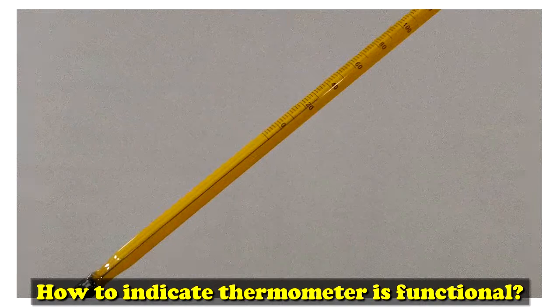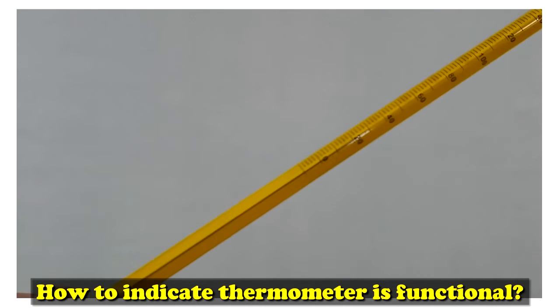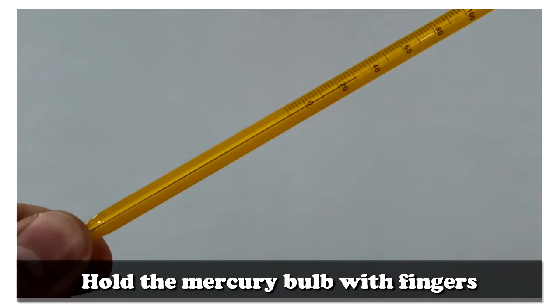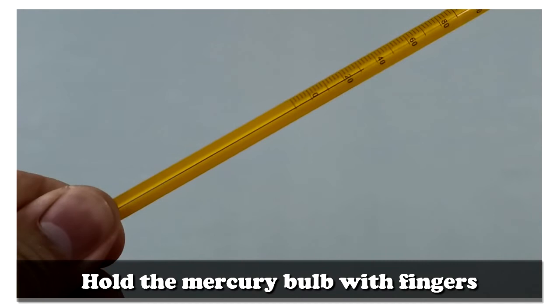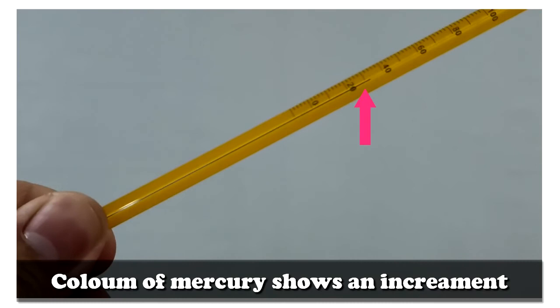How to indicate the thermometer is functional? First, hold the mercury bulb with fingers. Make sure that column of the mercury shows an increment.